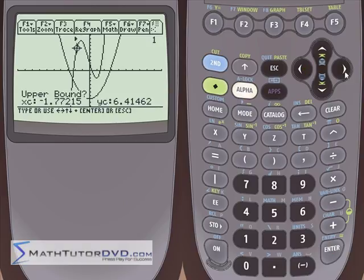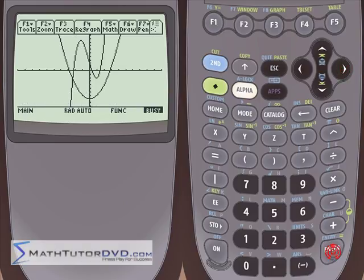We go to a lower bound, hit enter. We go to an upper bound and hit enter. It thinks for a second, searching through the window, and out spits an answer, negative 1.25 for X, comma, 8.406 for Y. So it finds the exact value.